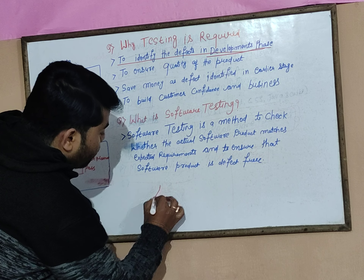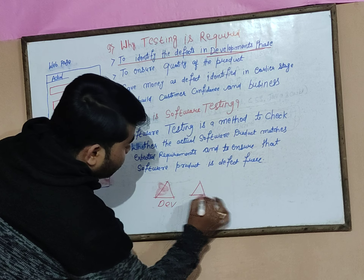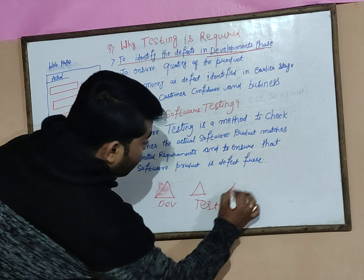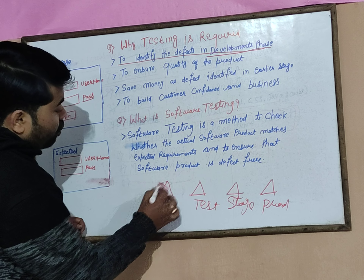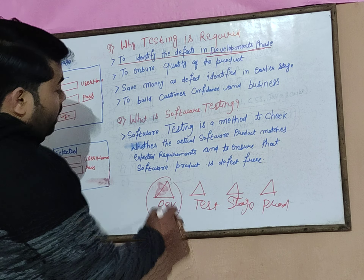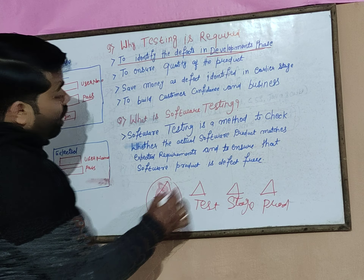In real time we have different environments: a dev environment, a test environment, a stage environment, and a production environment. Software is developed in the dev environment. While developing, we start testing in the test environment — we cannot directly push to production. If a defect reaches production, we lose business. So we identify defects in the development phase to ensure we provide a good quality product.